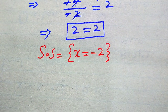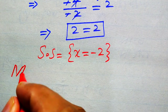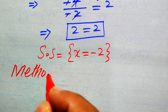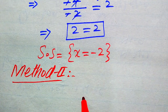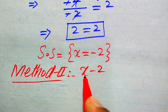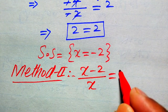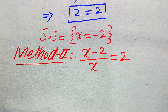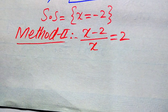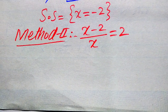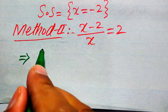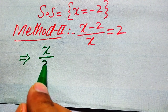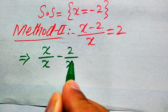Now we solve this problem using the second method. We copy down the given equation: (X minus 2) divided by X equals 2. In the second method, we break this fraction, writing it as X divided by X minus 2 divided by X, which equals 2.